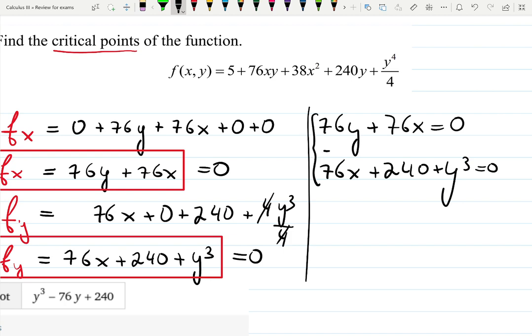When I subtract one from another one, I'll have 76y. 76x minus 76x gives you 0. Plus this write down 240. No, it's got to be minus because we subtract minus 240 and minus y³ equals to 0.